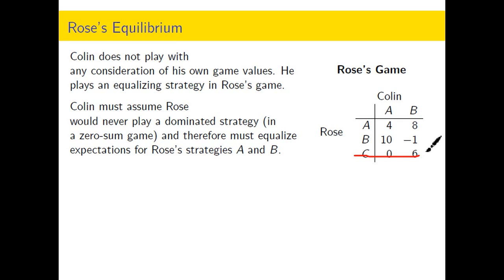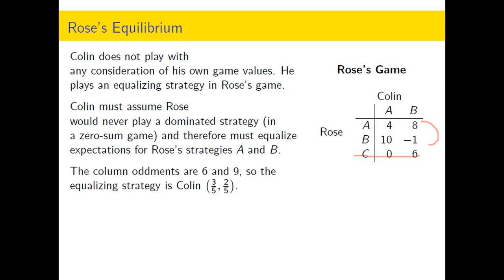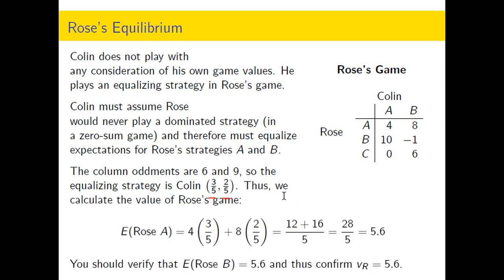We have a zero sum game here, and Rose is the maximizing player, so Rose will not play the dominated strategy. We just look at the oddment solution for the two-by-two sub-game where Rose plays A or B and Colin plays either A or B. Colin's oddments: 4 minus 10 is 6, and 8 minus negative 1 is 9, so the oddments are 6 and 9. The proportions that Colin plays A and B are 9/15 and 6/15, which reduce to 3/5 and 2/5.